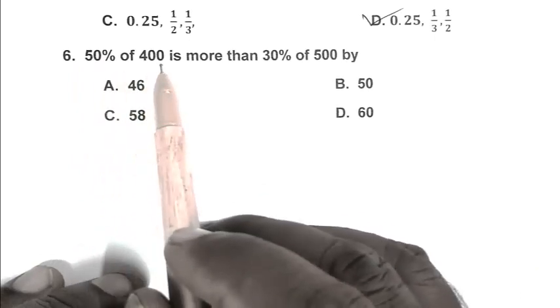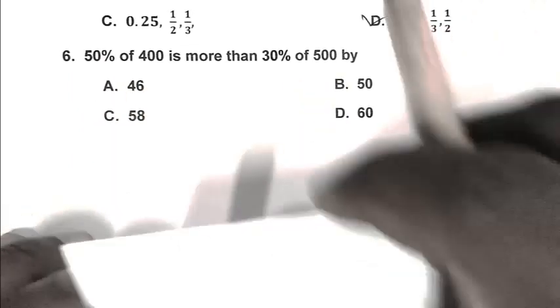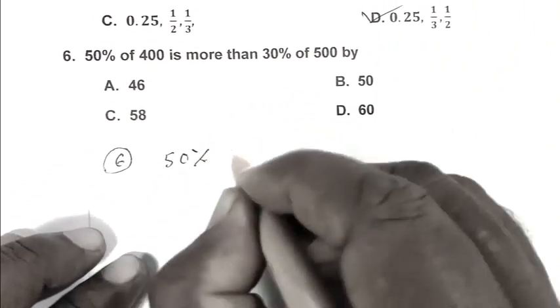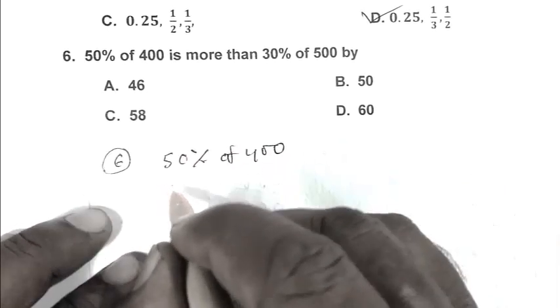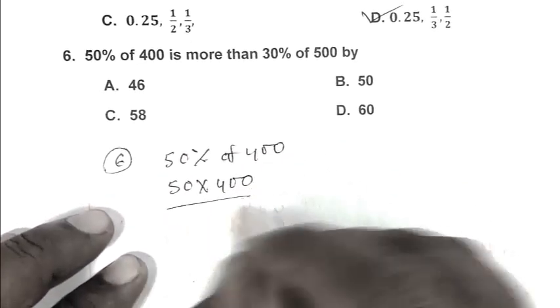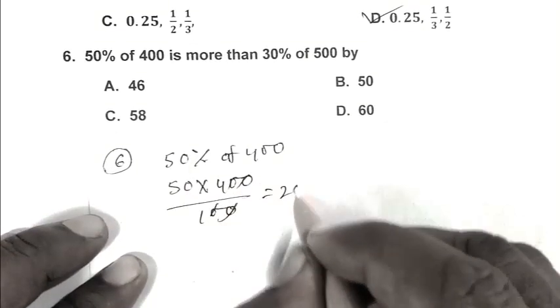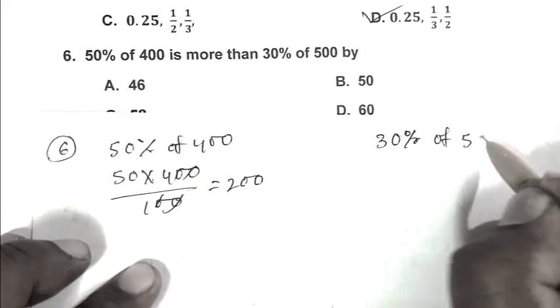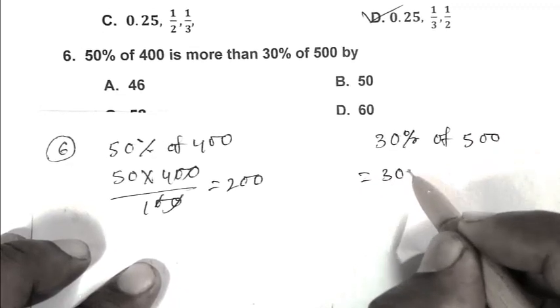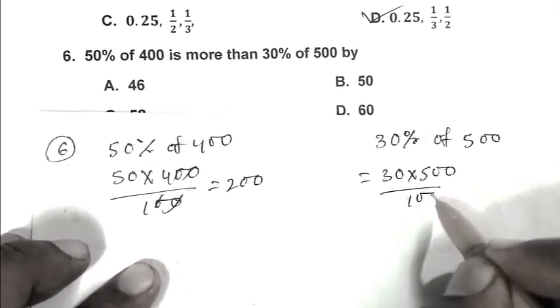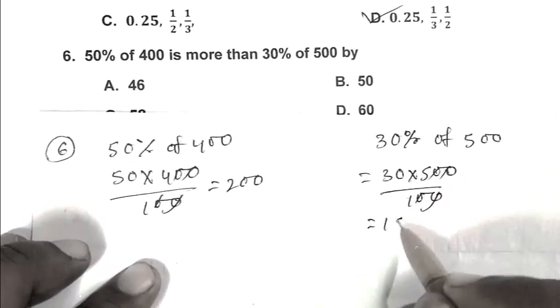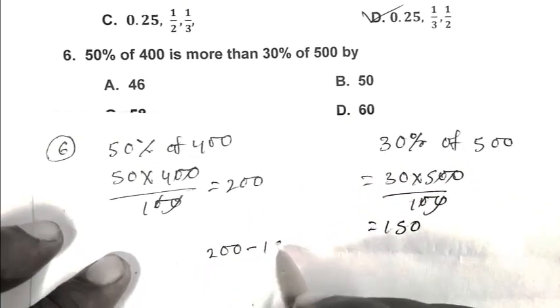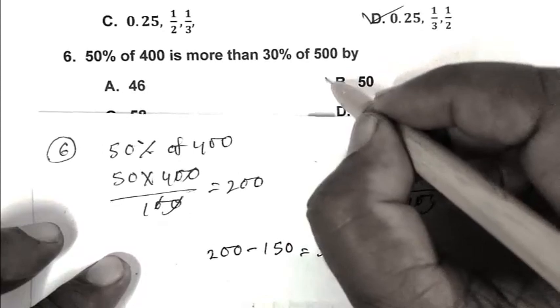Question number 6. 50% of 400 is more than 30% of 500 by? 50% of 400 is 50 multiplied by 400 upon 100, that is 200. 30% of 500 is 150. Getting the difference, 200 minus 150 equals 50. So B is the right answer.